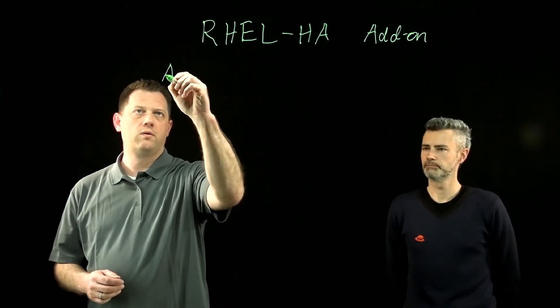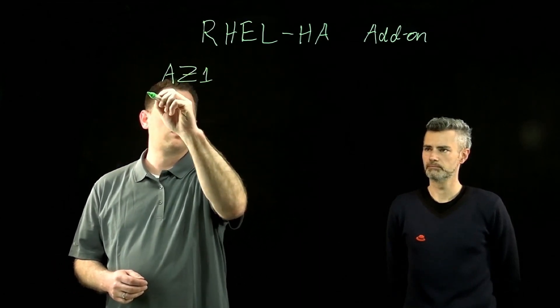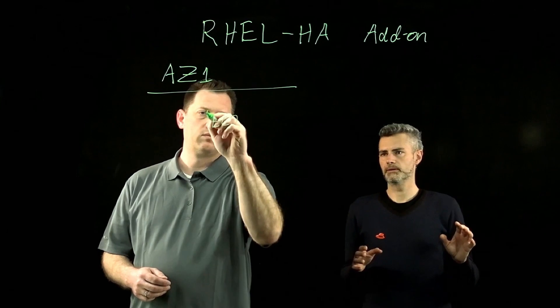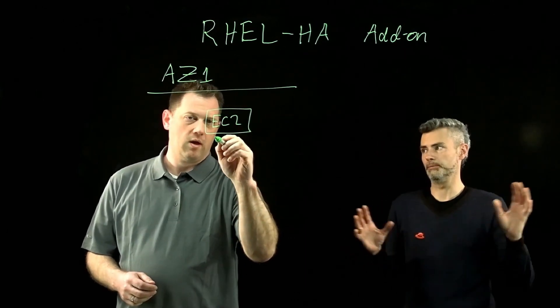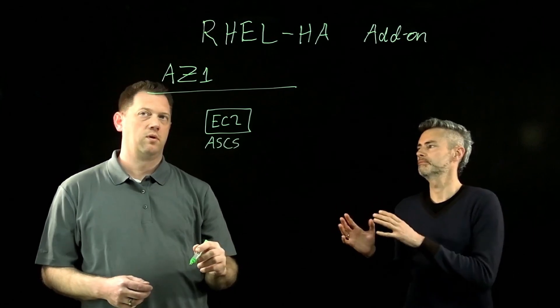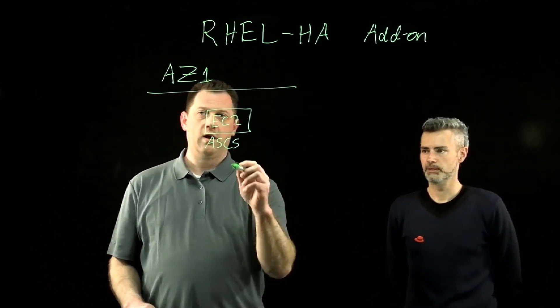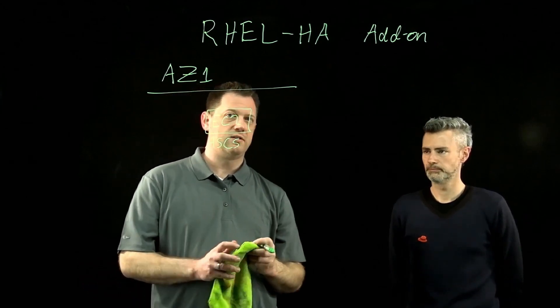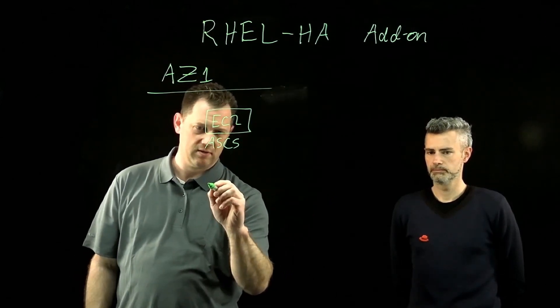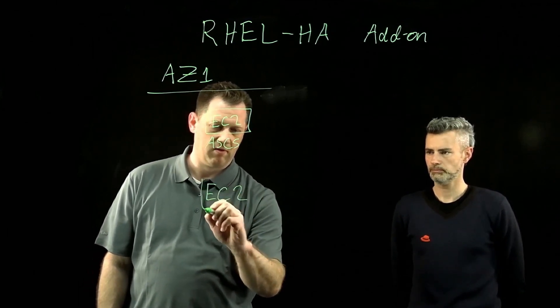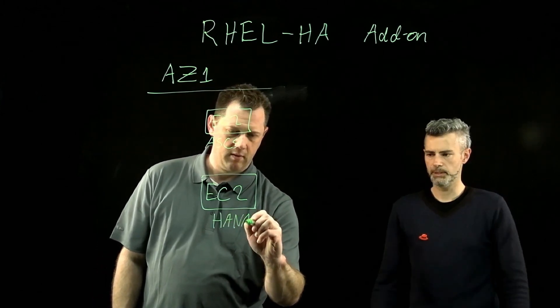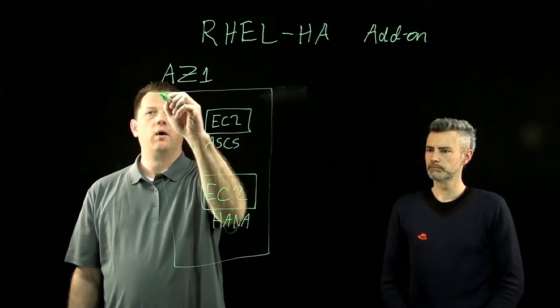So we're going to start off over here in AZ1, and in AZ1 we have an EC2 cluster here. Because we want to have the components of the clusters in different availability zones so that we can actually achieve high availability, or in the case of some problems in one of the locations, the primary location, it could be replicated in the other availability zone. And I said EC2 cluster, but this is actually just a single EC2 instance in this case. Then we have another EC2 instance down here for our database. Let's say it's SAP HANA.